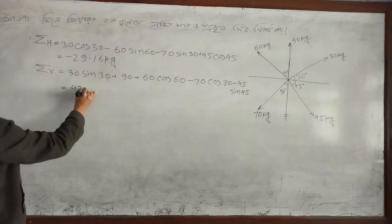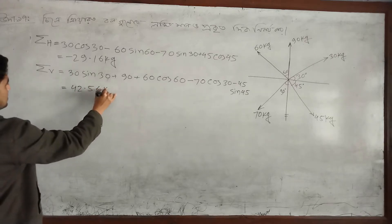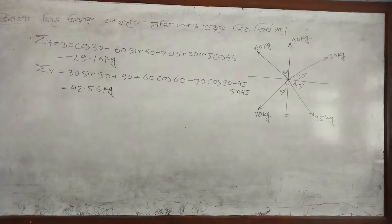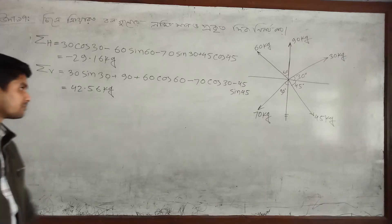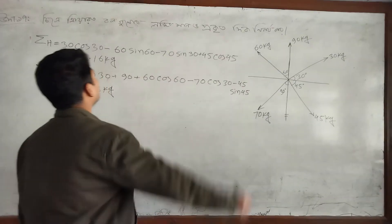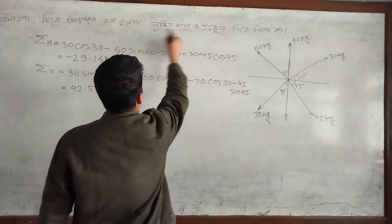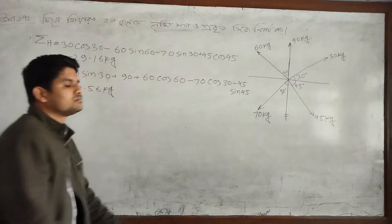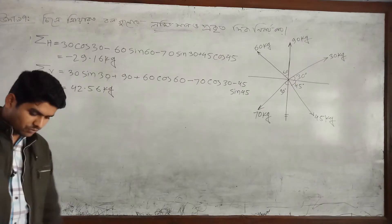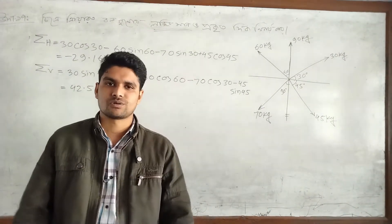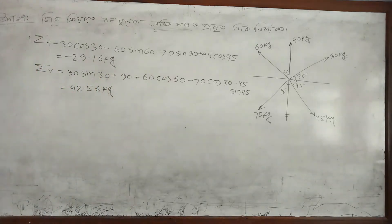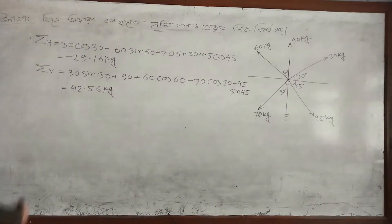42.56 kg — our horizontal and vertical forces. Man 1. Resultant force — okay, other — resultant force.